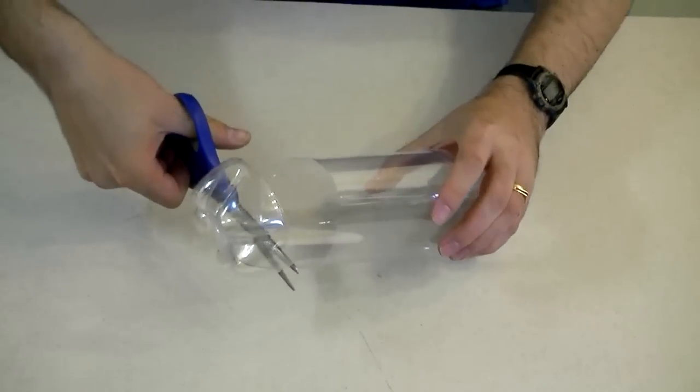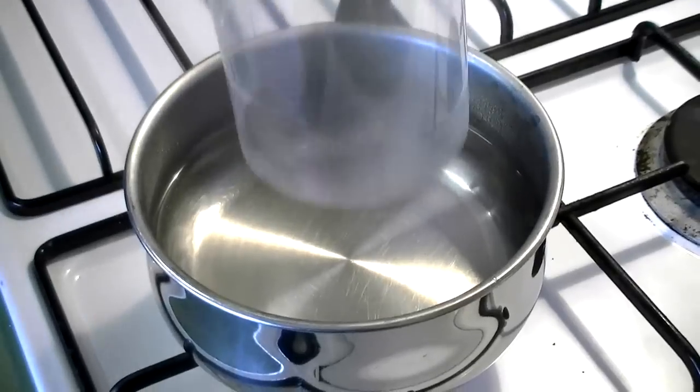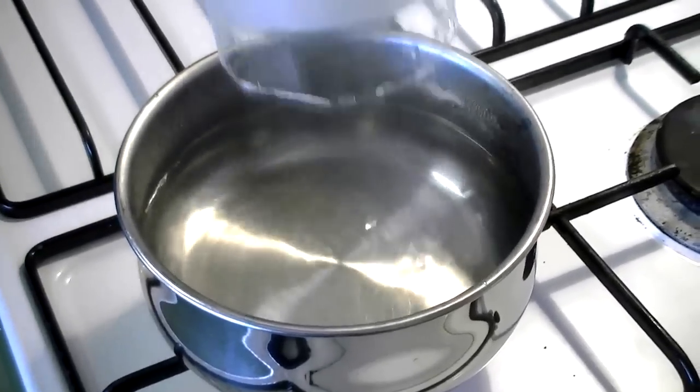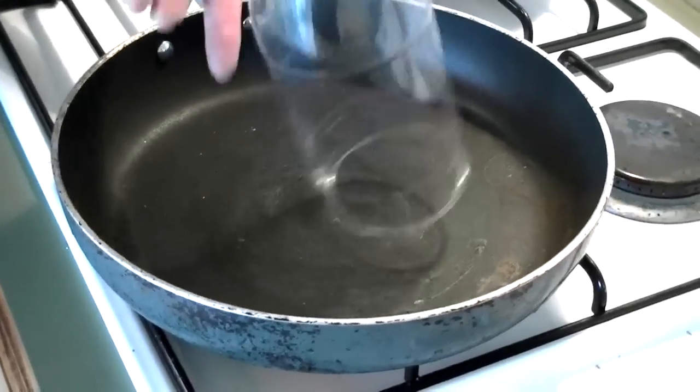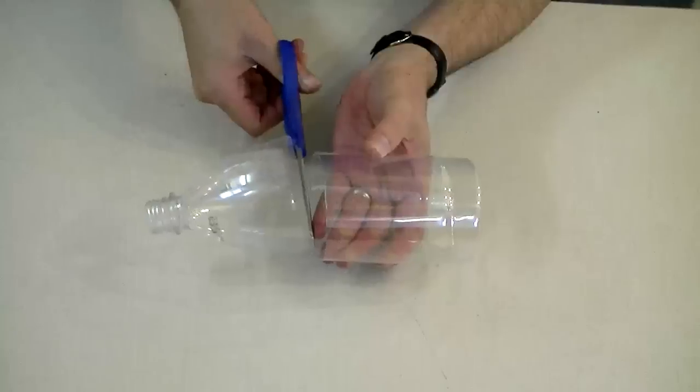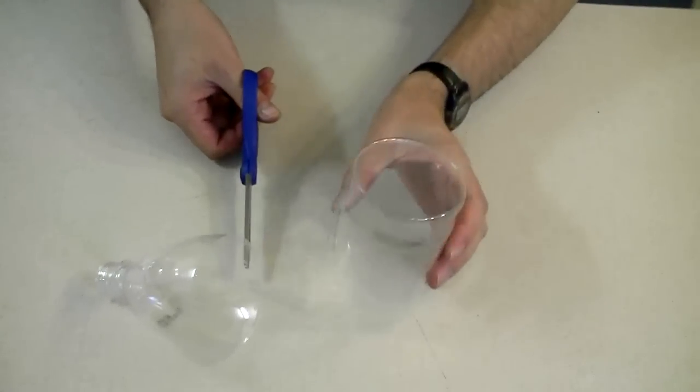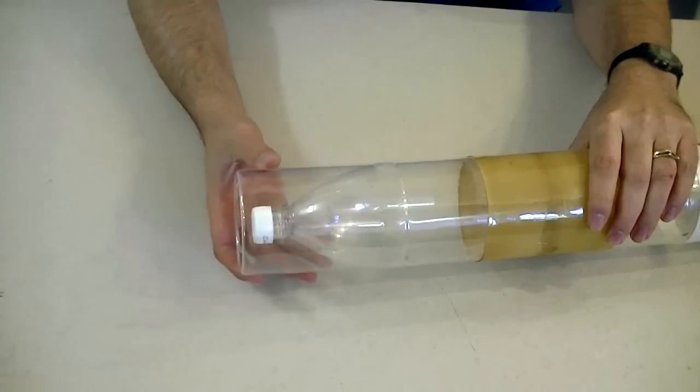Cut off the bottom of another bottle. Shrink it and curl it. Cut the top off and slide it onto your rocket.